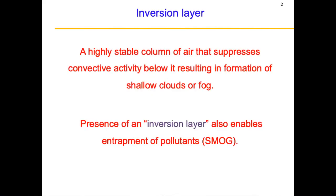An inversion layer is a highly stable column of air which suppresses any convective activity below it, thereby resulting in the formation of shallow clouds or fog. The presence of an inversion layer also allows pollutants to get entrapped in a very shallow layer at very short height from the ground, thereby depleting the air quality.